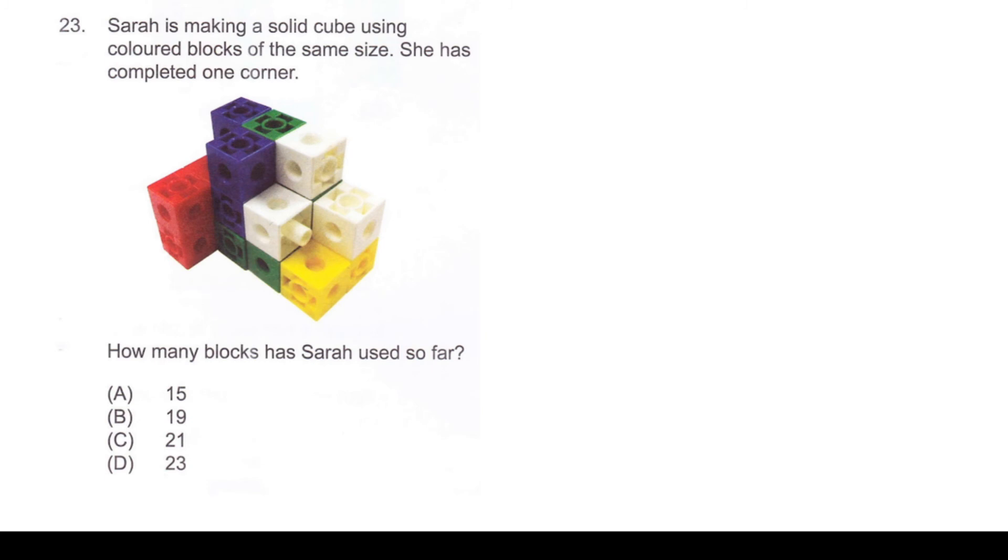This is on visual counting. Sarah is making a solid cube using colored blocks of the same size. She has completed one corner. How many blocks has Sarah used so far? Visually, if you notice, there are 4 stacks of 3 rows each. There are 2 stacks of 2 rows behind and 2 stacks of 2 rows in front. Leaving us with just one more stack, the yellow one, which is just 1 block. The total number of blocks equals 3 times 4, which is 12, plus 2 times 4, which is 8, plus 1. So 12 plus 8 plus 1 equals 21. Our answer is option C.